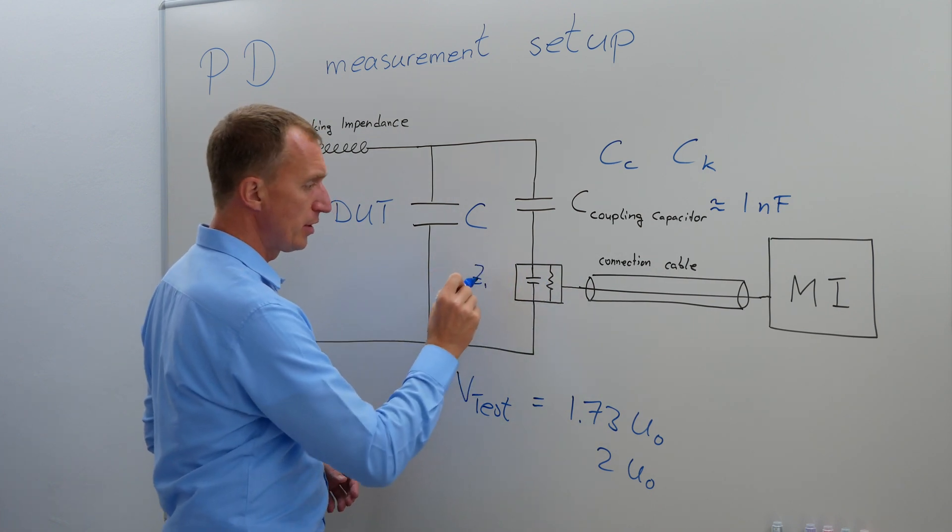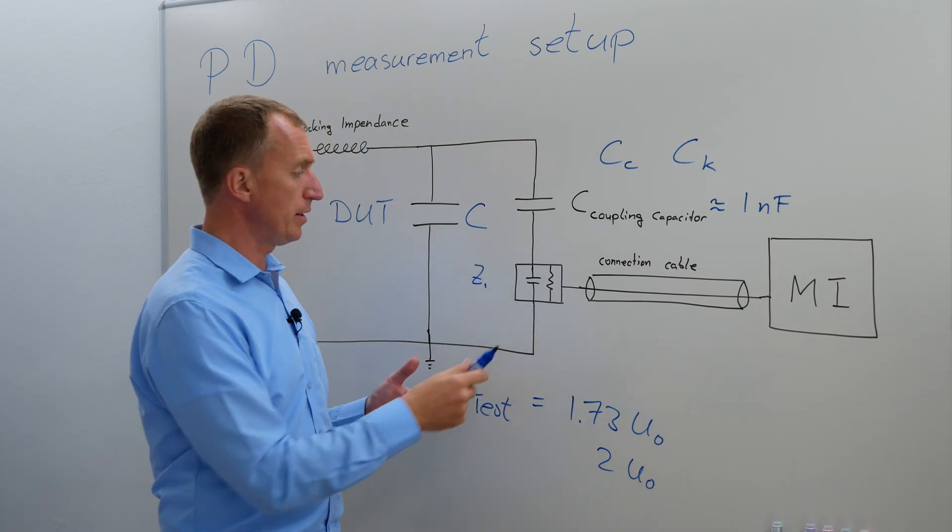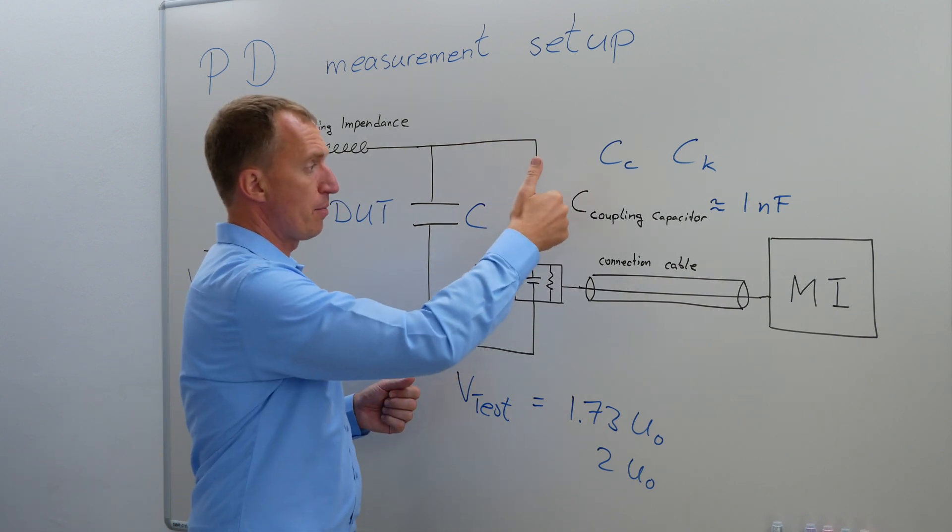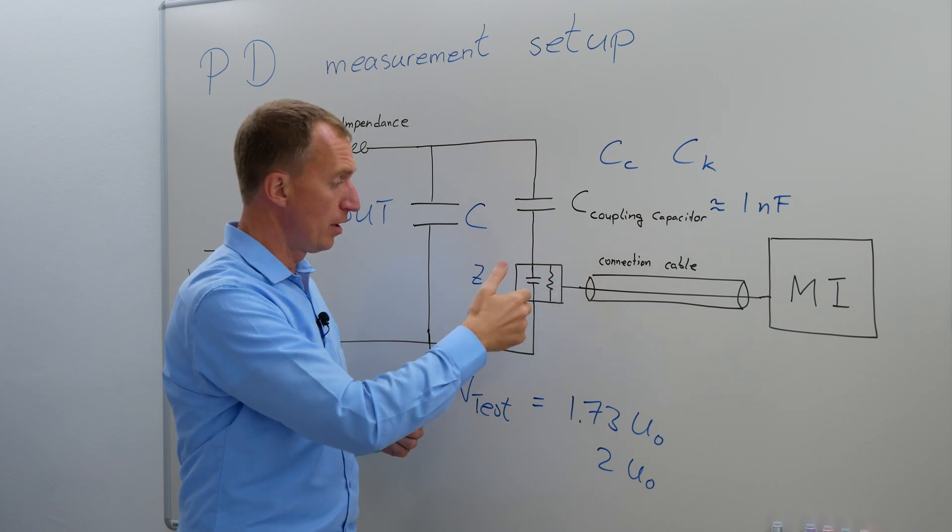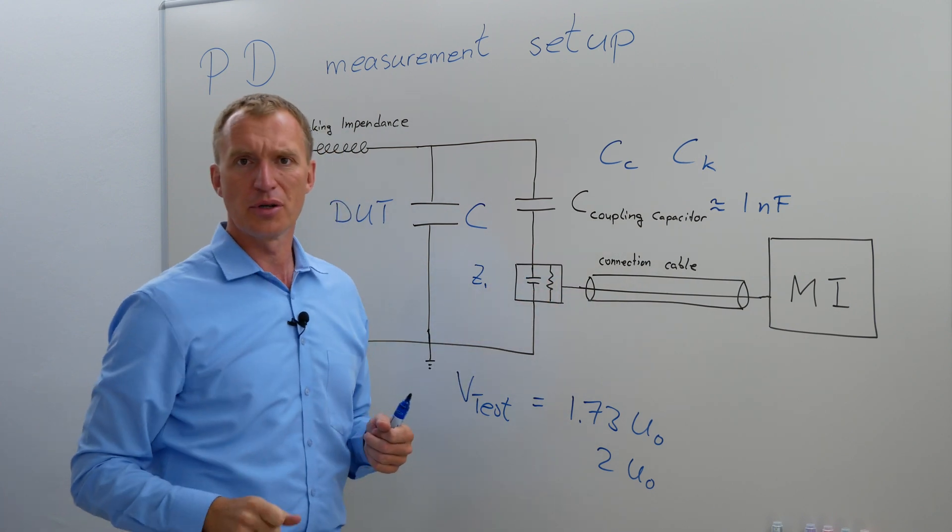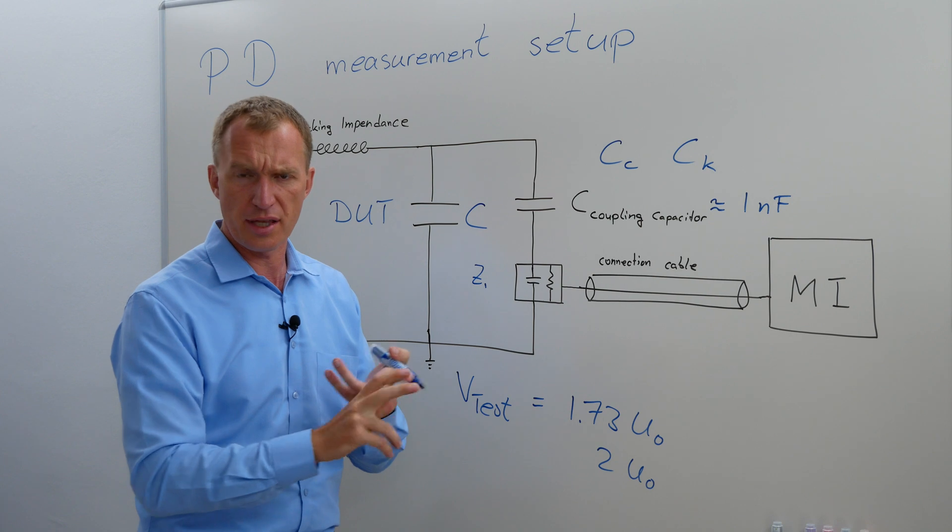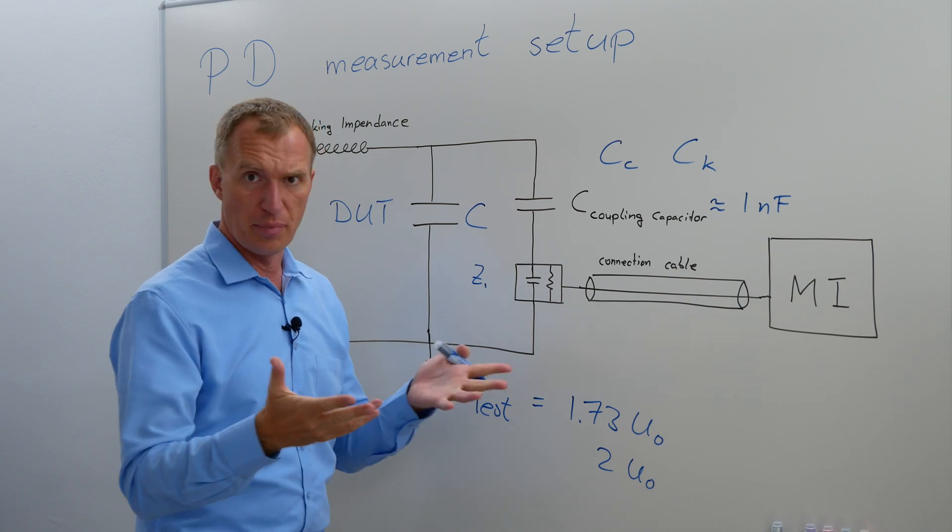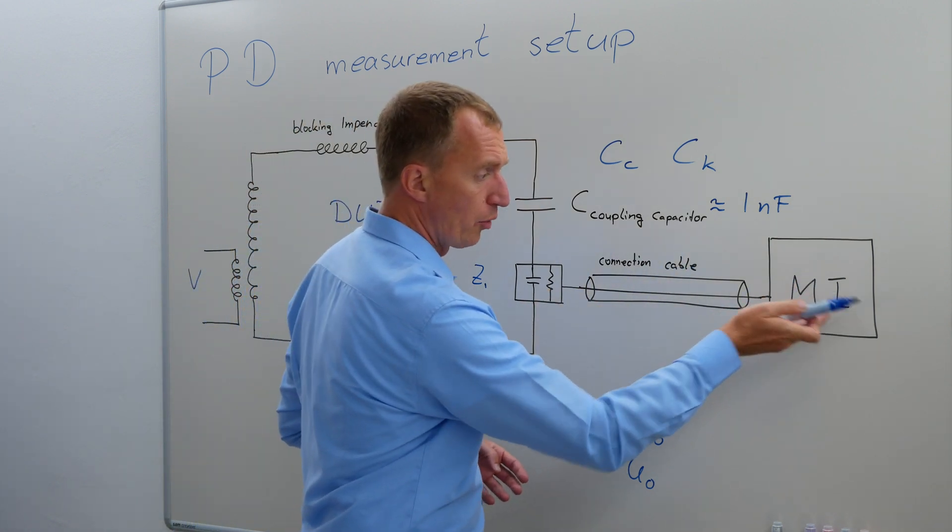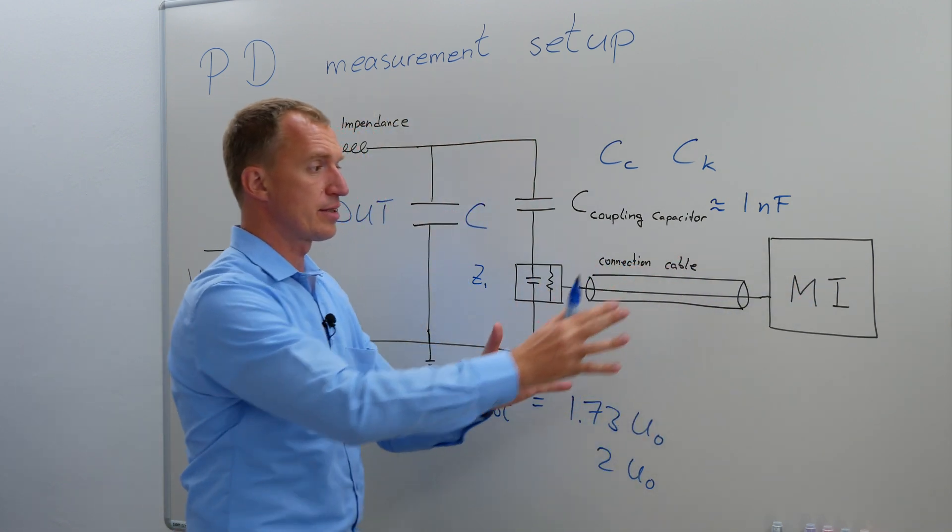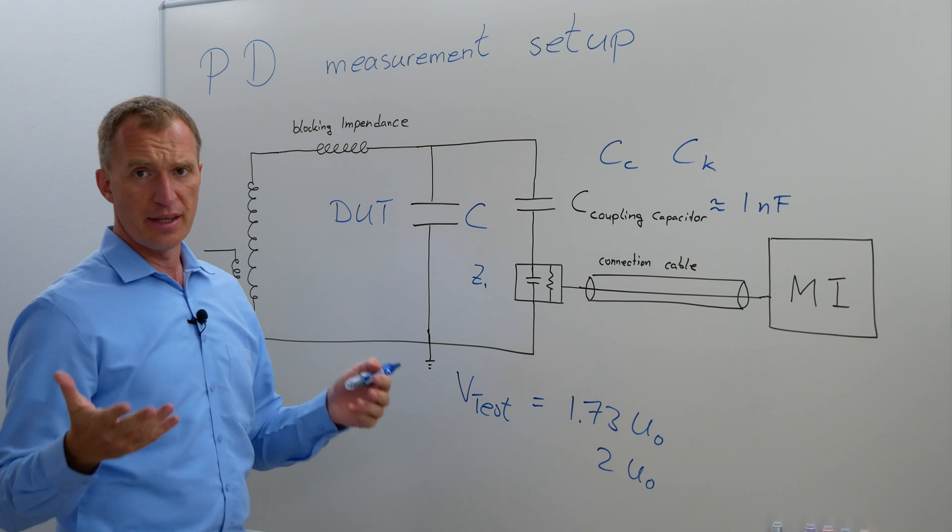Now here you have a measuring impedance. Some companies call it a quadripole. This quadripole is technically a capacitance as well, and it creates the capacitive divider between the high-voltage coupling capacitor and this low-voltage capacitor. I drew a small resistor in here because we're getting two signals: the charge signal, the partial discharge, and furthermore, the voltage information. We have a connection cable to our measuring instrument. These things are kept rather easy and simple. So that's pretty much it.